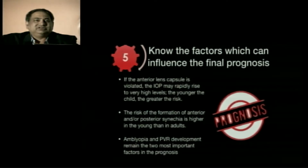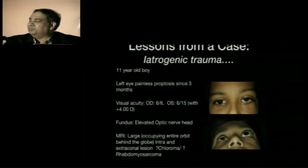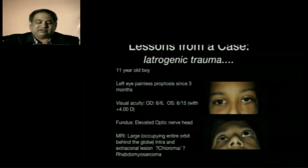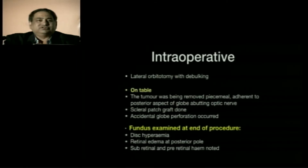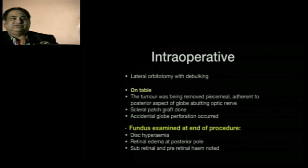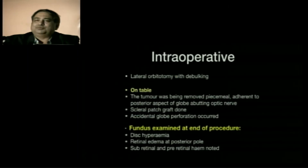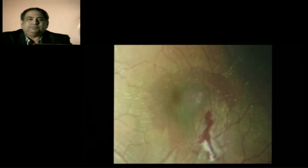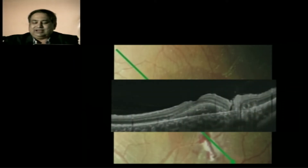I'd like to share a case of iatrogenic trauma. An 11-year-old boy presented with painless proptosis for three months with good vision and a large intra- and extra-conal mass. He underwent lateral orbitotomy and debulking; the tumor was removed piecemeal and was very adherent to the posterior aspect of the globe, abutting the optic nerve. There was thinning, a scleral patch graft was done, and accidental globe perforation occurred. On examination, the child had retinal edema, disc hyperemia, and pre-retinal and sub-retinal hemorrhage. This is how the child was presented to the retinal clinic.